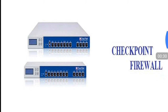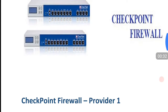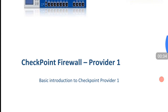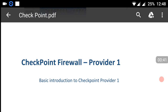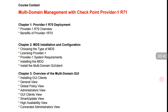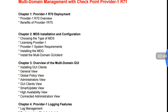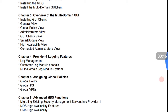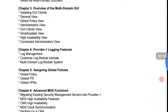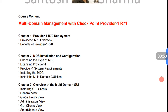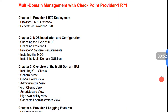This is the Checkpoint firewall and how it looks like. So Checkpoint Provider 1 — in this video I will be giving you a brief introduction about Provider 1. These are the course contents; there are a maximum of six chapters that I will explain and teach you. The first chapter is Provider 1 R70 deployment, in which I will tell you about the overview of R70 and benefits of Provider 1.